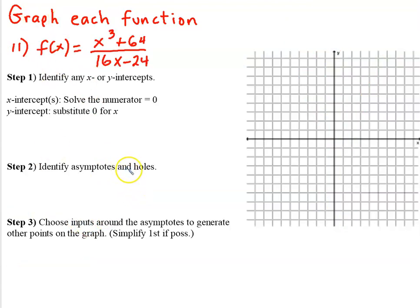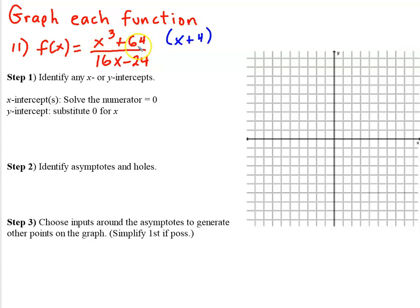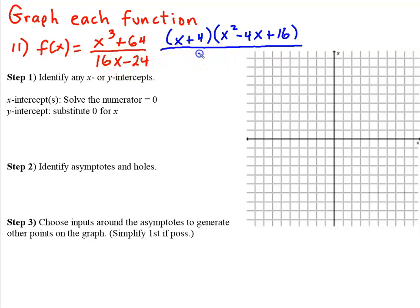Moving on to number 11 — same process repeated. The numerator x³ + 64 is the sum of two cubes, which factors as (x + 4)(x² - 4x + 16). The denominator factors using a GCF of 8. For x-intercepts, the trinomial (x² - 4x + 16) gives an imaginary result with the quadratic formula, so no x-intercept from that. But from (x + 4) = 0 we get x = -4 as our x-intercept.